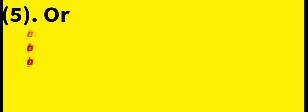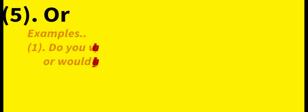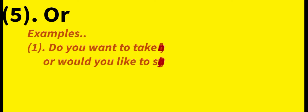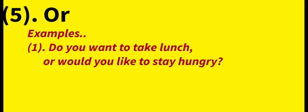The fifth coordinating conjunction is 'Or.' It gives options or alternatives. Example: 'Do you want to take lunch or would you like to stay hungry?' Here, 'or' presents two choices — do you want to take lunch, or do you want to stay hungry? An important note: 'Or' is also used with 'either' as a correlative conjunction.